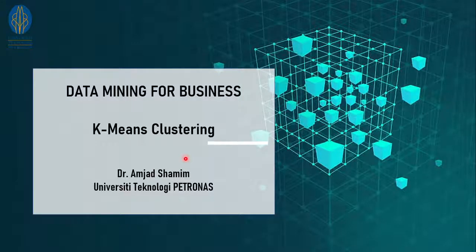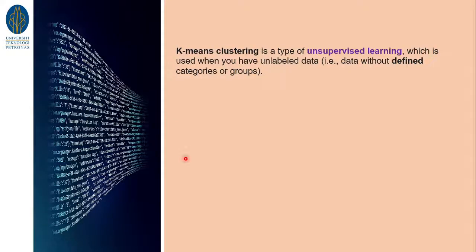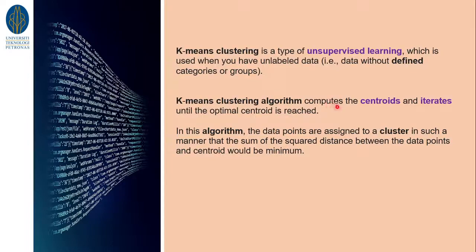In data mining for business, k-means clustering plays an important role. In this video I will show you how to do k-means clustering in Excel. K-means clustering is a type of unsupervised learning which is used when you have unlabeled data — that is, data without defined categories or groups. The k-means clustering algorithm computes the centroids and iterates until the optimal centroid is reached. Data points are assigned to a cluster such that the sum of the squared distances between the data points and the centroid is minimum.